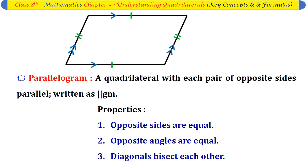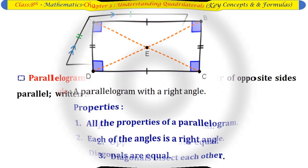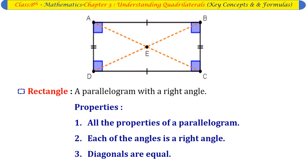Parallelogram: A quadrilateral in which each pair of opposite sides are parallel. Properties: opposite sides are equal, opposite angles are equal, diagonals bisect each other. Rectangle: A parallelogram with a right angle. Properties: all properties of a parallelogram, each angle is a right angle, and diagonals are equal.